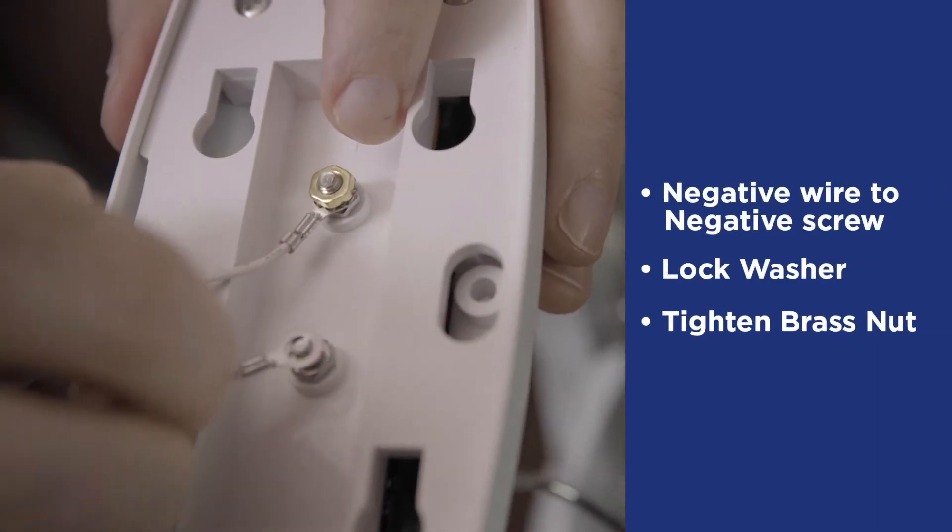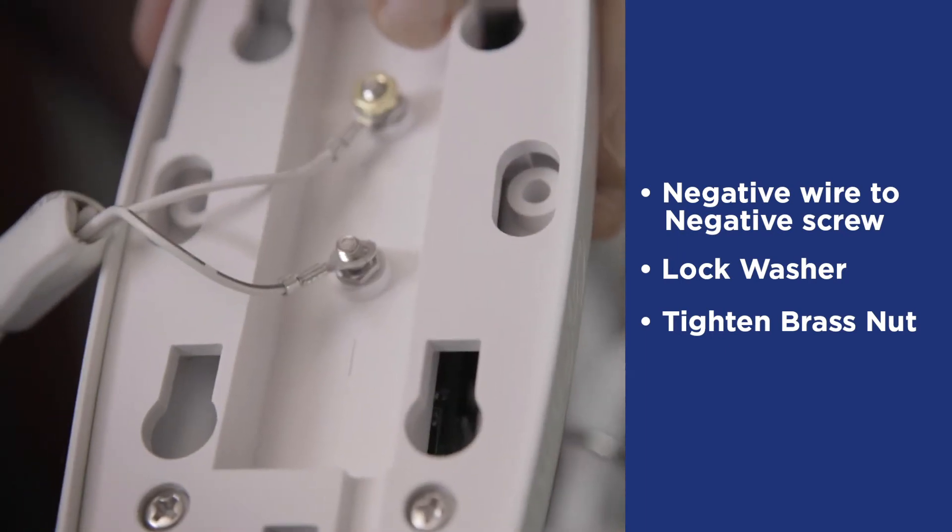Repeat by attaching the negative wire to the screw with the lock washer, brass nut, and tighten.